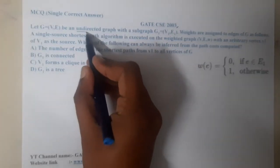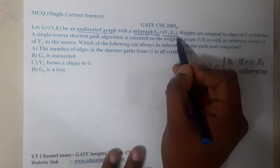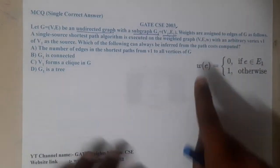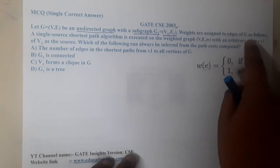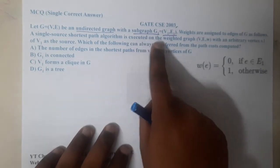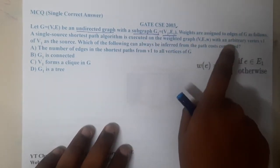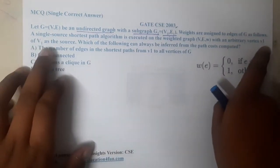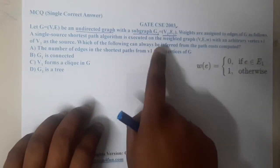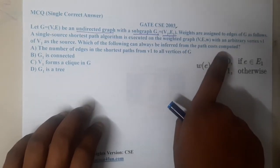The question is: let G = (V, E) be an undirected graph with a subgraph G1 = (V1, E1). Weights are assigned to edges of G as follows, and a single source shortest path is executed on the weighted graph G = (V, E, W) with an arbitrary vertex v1 of V1 as the source.